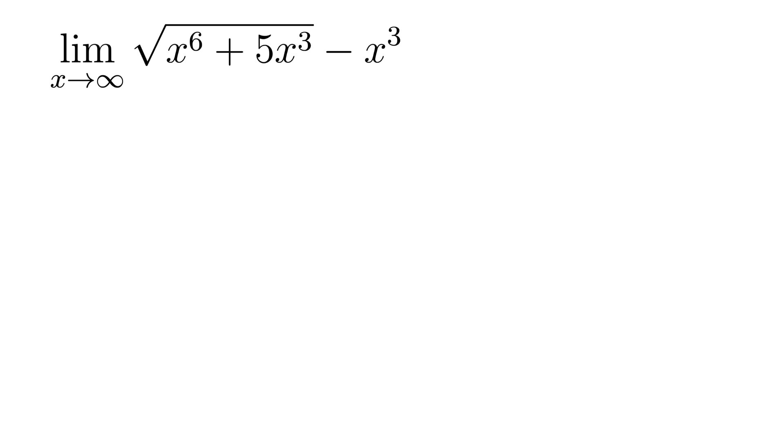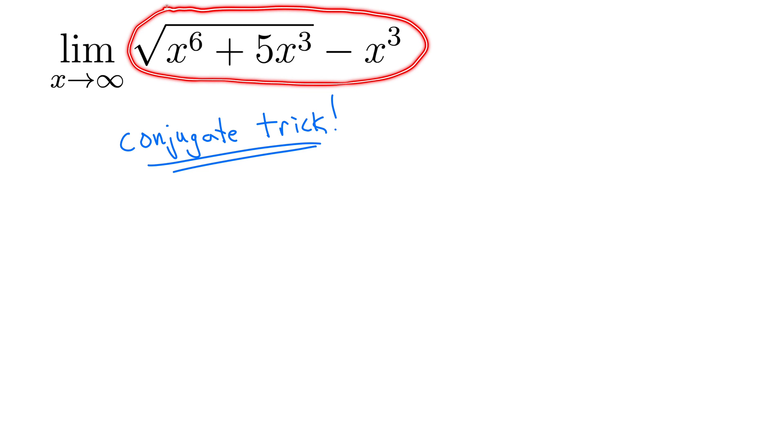Now oftentimes when you have a radical plus or minus something that's not in a radical, you use what's known as the conjugate trick. What I'll do is take the conjugate of this entire term, and what the conjugate means is you take the exact same thing, but you change the sign. So here I'm going to change this minus x cubed to plus x cubed, and you multiply.